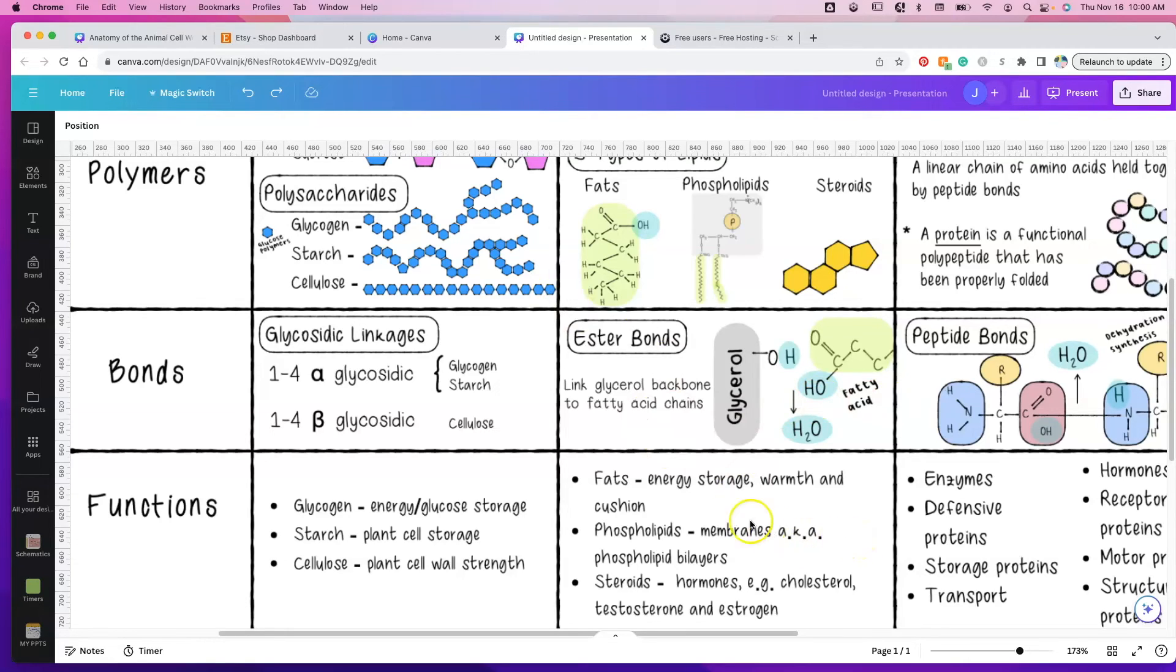Fats, we should know, is our energy storage. It keeps us warm and it acts as cushion. Phospholipids are what making up the membranes, the plasma membranes, the phospholipid bilayer. This four ring structure makes up cholesterol and hormones such as testosterone and estrogen.